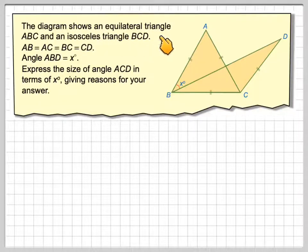The diagram shows an equilateral triangle ABC and an isosceles triangle BCD. Length AB is equal to AC, which is equal to BC, which is equal to CD.